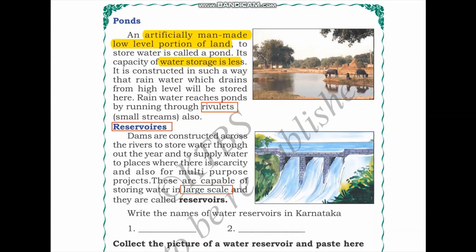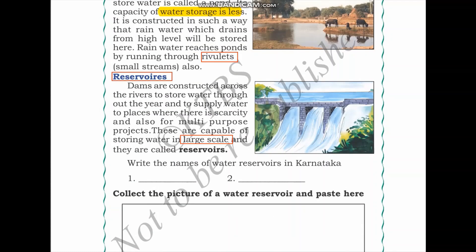Now, name the water resources in Karnataka. One example is the Krishna Raja Sagara Dam, also known as the KRS Dam. Another one is the Almatti Dam. Find out other reservoirs of water in Karnataka around you.